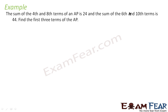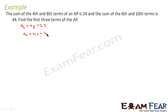The question says the sum of the fourth and eighth terms of an AP is 24, and the sum of the sixth and tenth terms is 44. We have to find the first three terms. If we find a and d, we can find the first three terms. So we have two equations.